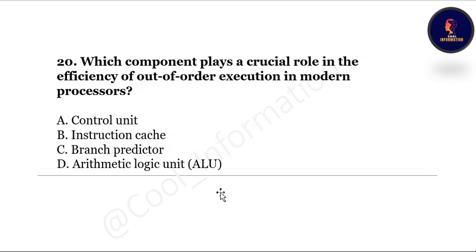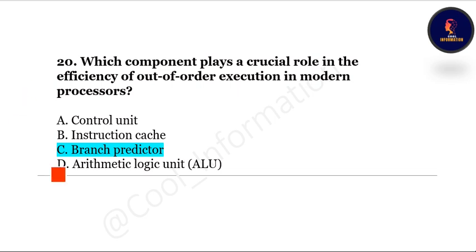The last question: which component plays a crucial role in the efficiency of out-of-order execution in modern processors? The correct option is C — branch predictor. Thank you so much for watching. I will upload one more video where we will see 30 combined MCQs from all the units. Till then, take care, bye bye!